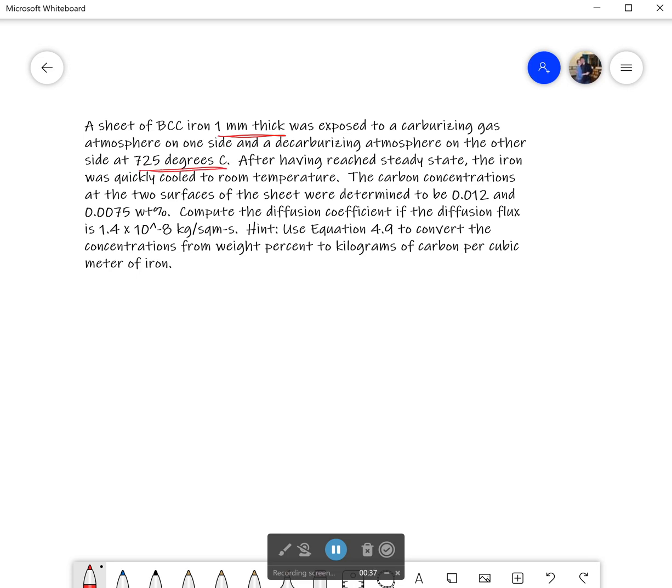After having reached steady state, that's the key here for telling us what equation to use, the iron was quickly cooled to room temperature. The carbon concentrations at the two surfaces of the sheet were determined to be 0.012 and 0.0075 weight percent. And it says compute the diffusion coefficient if the diffusion flux is 1.4 times 10 to the negative 8 kilograms per square meter seconds.